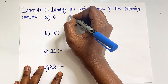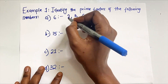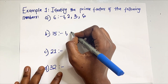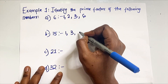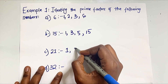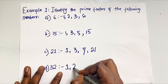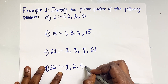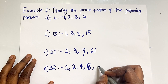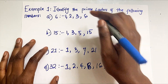You cannot get the prime factors of a number without first getting all the factors of that number. So let's write down the factors of all these numbers. The factors of 6 are 1, 2, 3, and 6. The factors of 15 are 1, 3, 5, and 15. The factors of 21 are 1, 3, 7, and 21. The factors of 32 are 1, 2, 4, 8, 16, and 32.